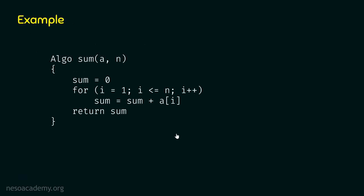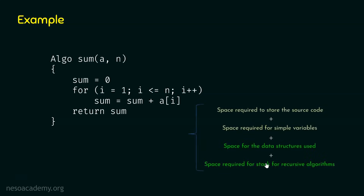Here is the algorithm. We already saw this algorithm in our previous presentation. This algorithm is capable of calculating the sum of n elements of a list. The list in this algorithm is A, and n represents the size of this list. The space required to store the source code and the space required for simple variables are constant, so we will not consider these two factors.